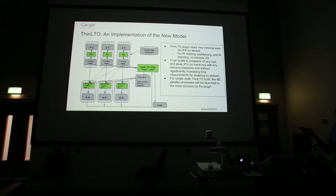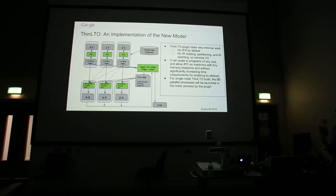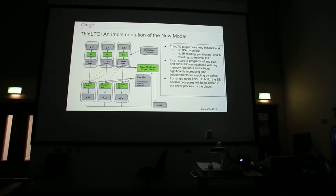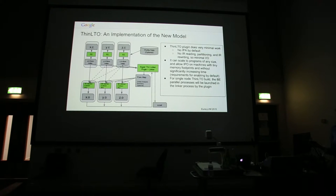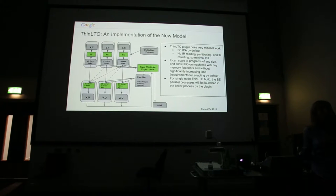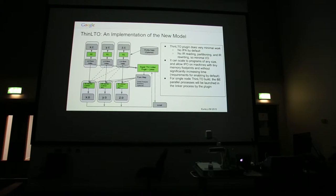The advantage of this thin linker plugin is that it's very, very minimal. By default, it does no IPA, no IR reading, rewriting, or partitioning — it simply aggregates those maps. The advantage is that it can scale to very, very large programs. At the same time, you can enable IPO on machines with small memory footprints, and without greatly increasing compile time.